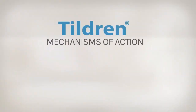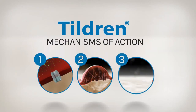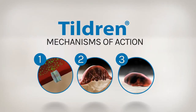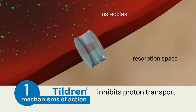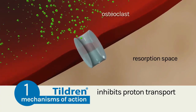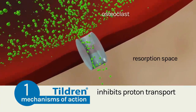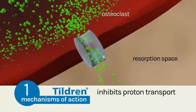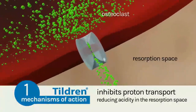Once inside the osteoclast, Tildrin has three mechanisms of action resulting in modulation of osteoclastic activity. First, Tildrin inhibits the transport of protons across the membrane to the resorption space, creating a less acidic environment.